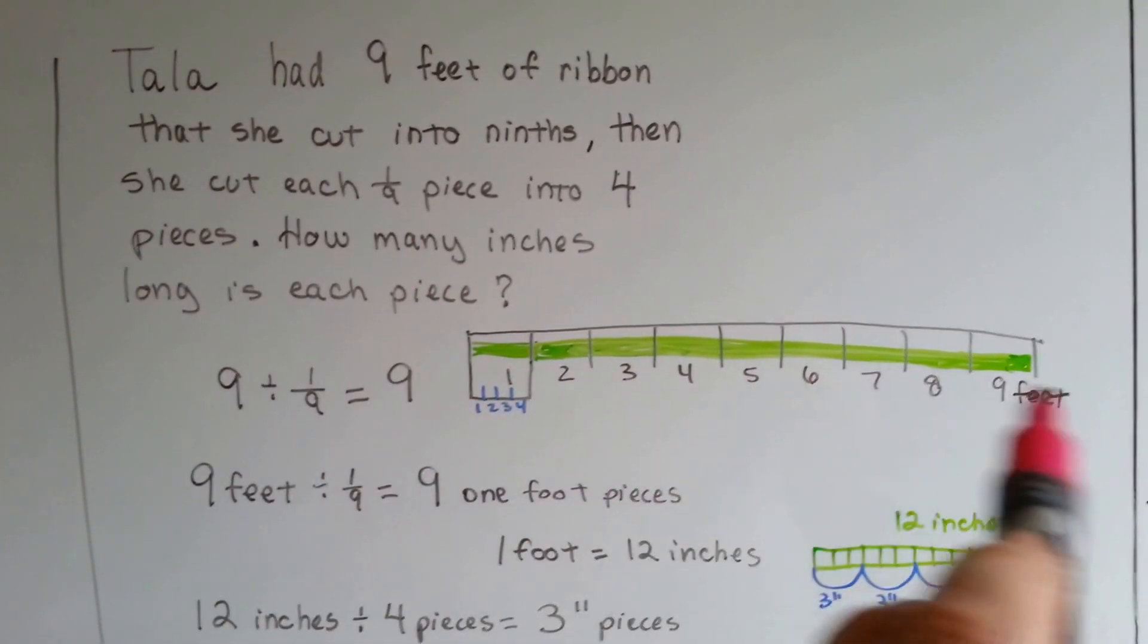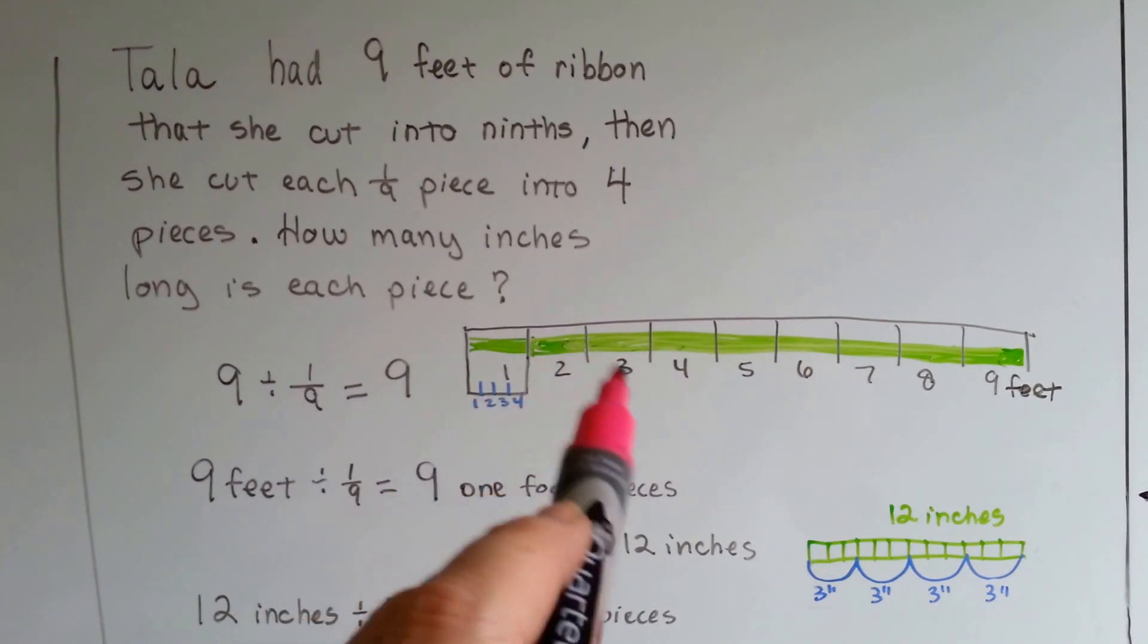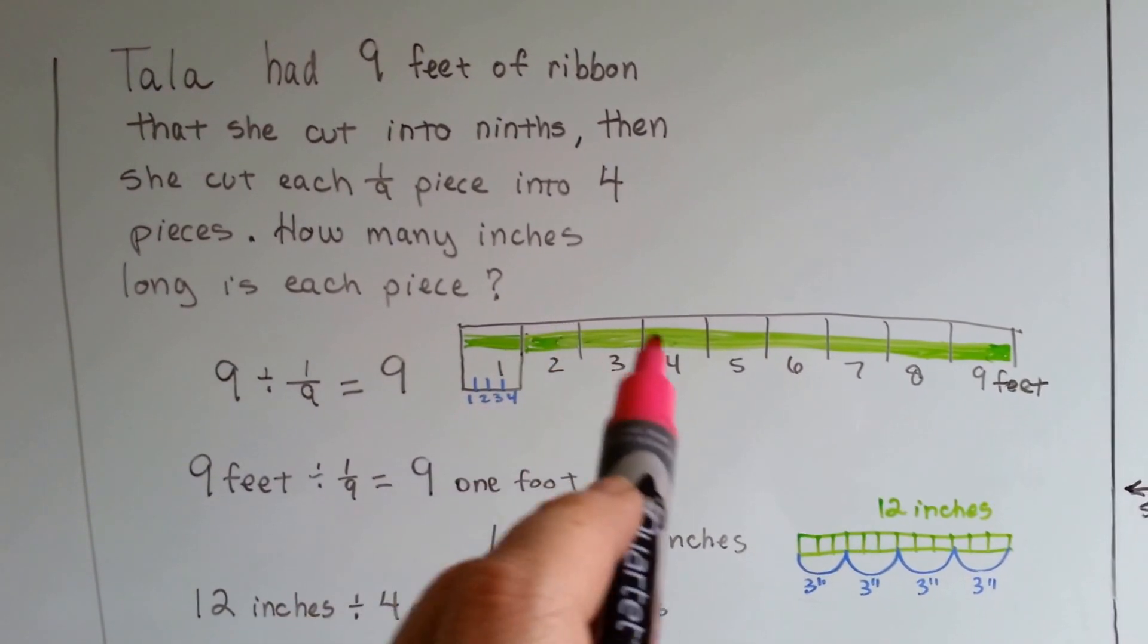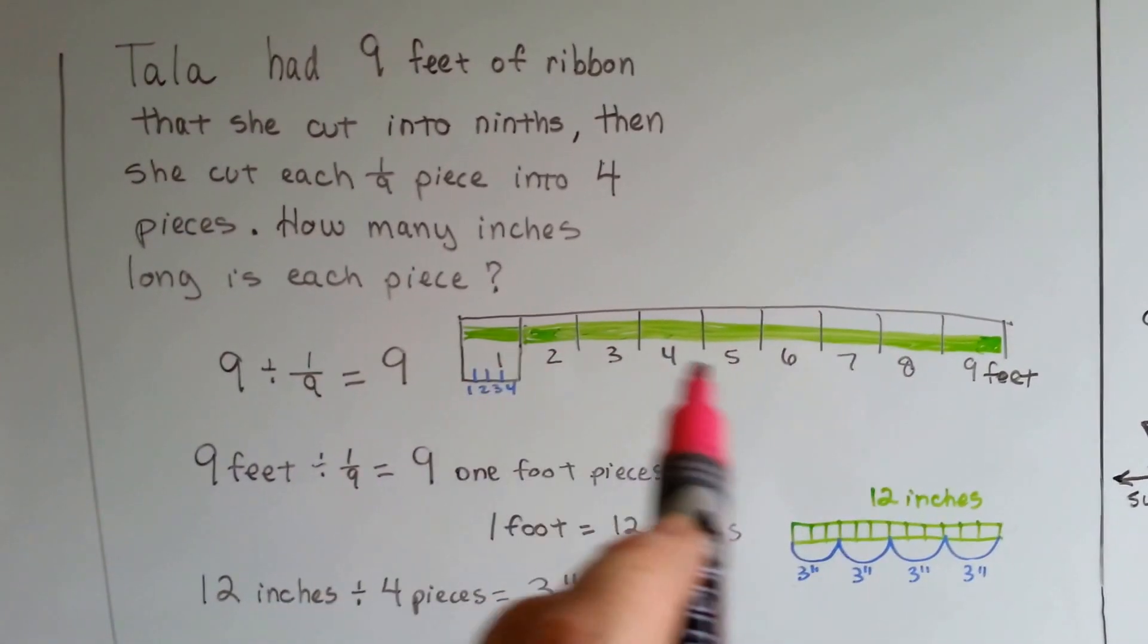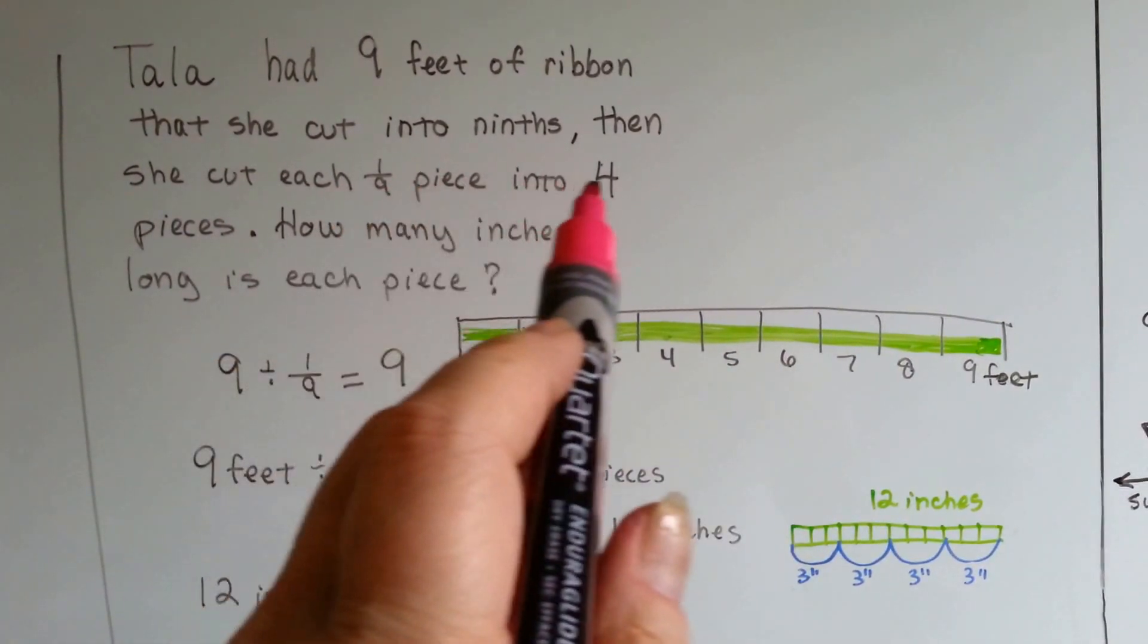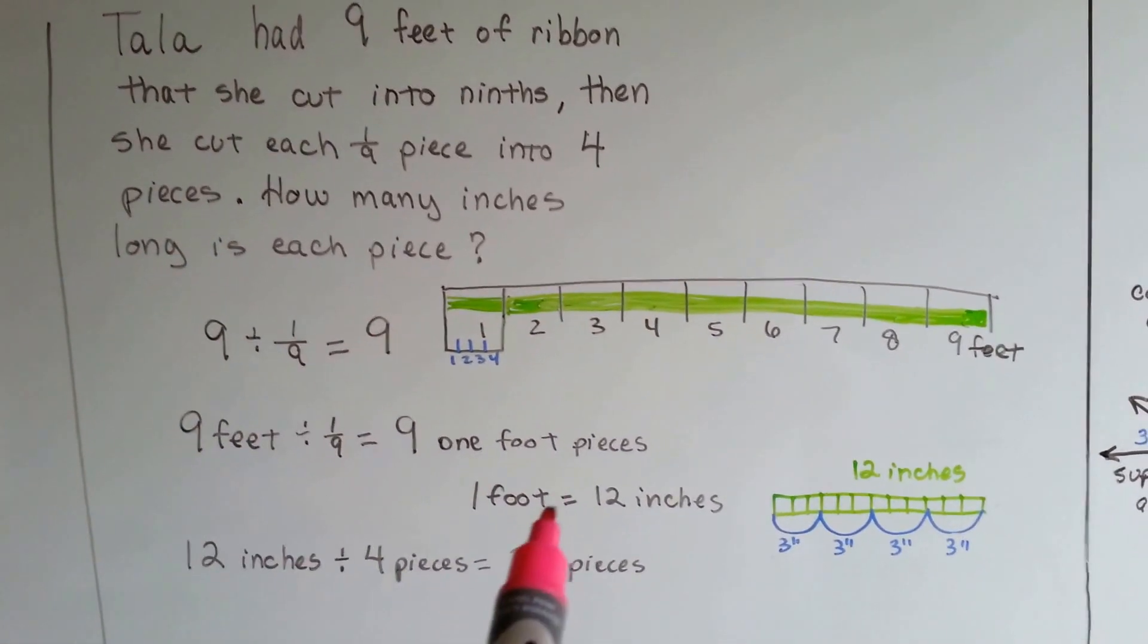She had nine feet of ribbon that she cut into ninths. So that means if it was nine feet, she cut them each into a one foot piece. There's nine one foot pieces. She cut each of those one foot pieces into four pieces.